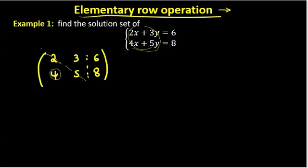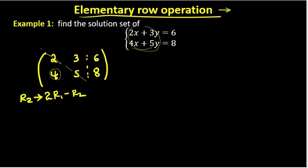If you want to write about this, it will be 0. Rho 2 will be 4. Rho 2 will be 2 times rho 1 minus rho 2. Then we have 2 times rho 1 minus rho 2. Therefore, this gives 0 equals 1.